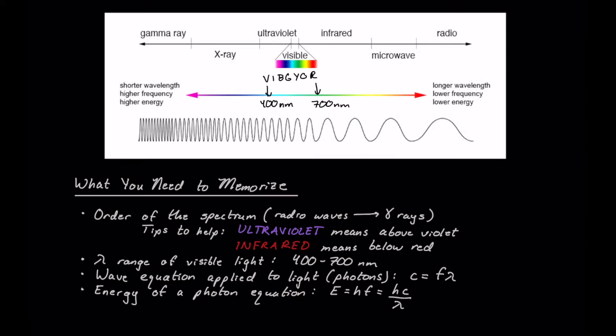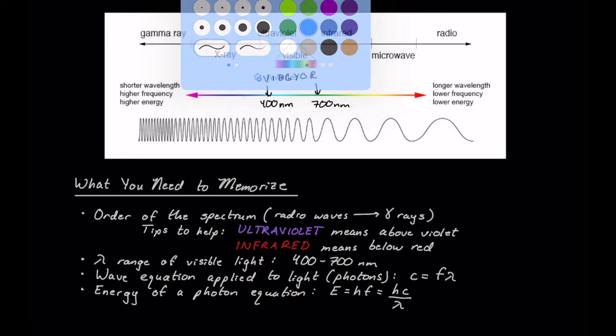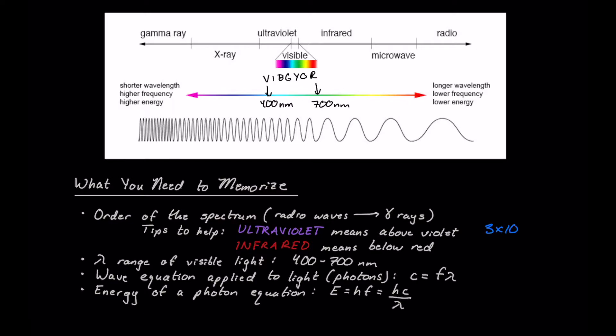Next thing we need to memorize is our wave equation as applied to light, aka photons. C is going to be our speed of light, which we should definitely have memorized as 3 times 10 to the eighth meters per second.